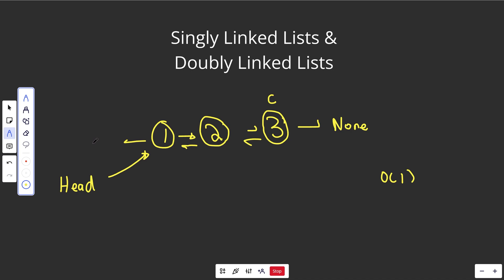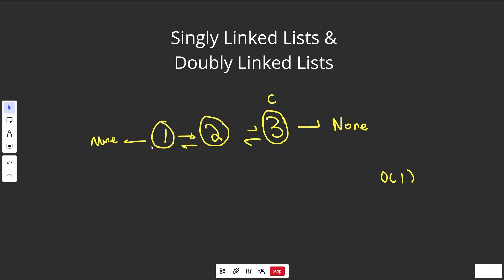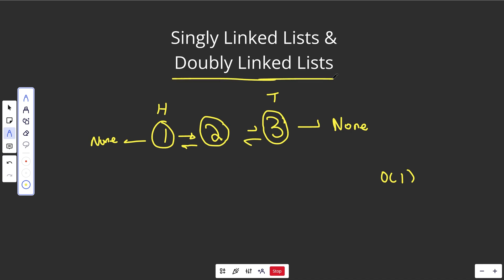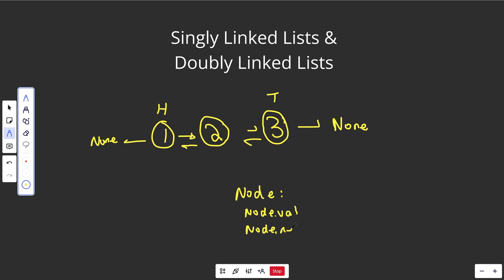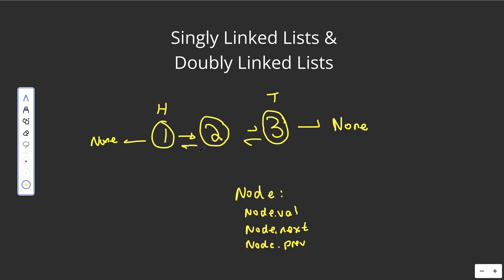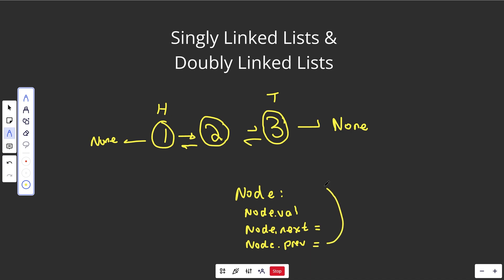A doubly linked list is basically the same thing except we have the reverse connection too. The head would also point backwards over to None. So we still have a head (marked H) and we also have immediate access to the tail. Instead of just access to the front, you have access to the back via the tail, and we can go both directions — traverse forwards or traverse backwards. In Python, a doubly linked list node class would have three things: node.value, node.next, and node.previous. node.next and node.prev are just references to node objects.